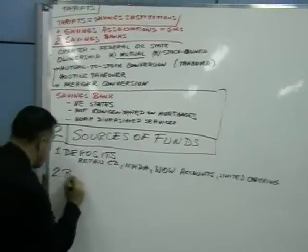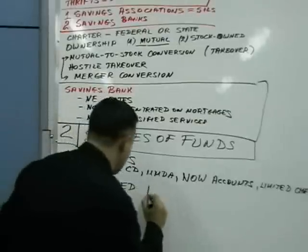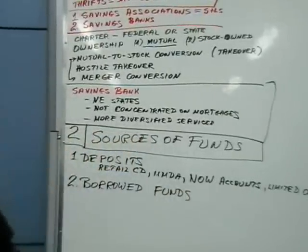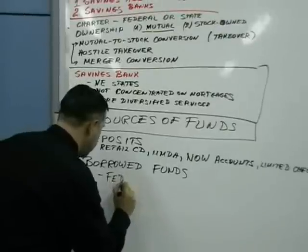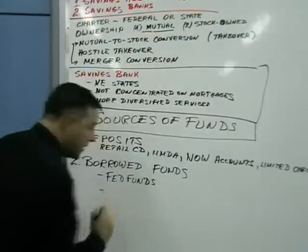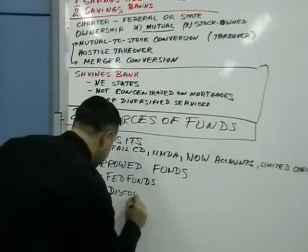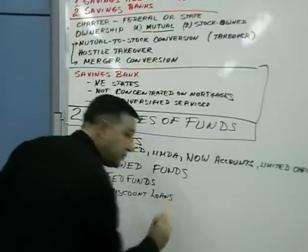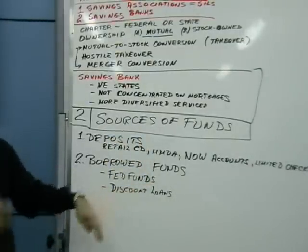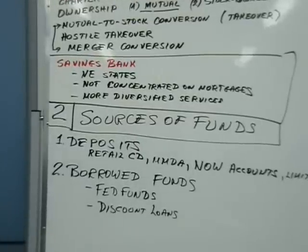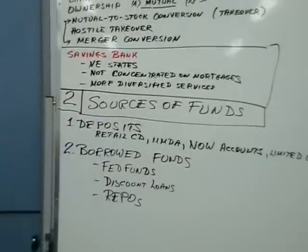The second source they use is of course borrowed funds. They borrow or lend — if they have surplus — to the Fed funds market. They also borrow from the Fed's discount window, which means discount loans, borrowing from the Fed. Most of these elements repeat themselves across institution types. The final way they typically finance themselves is through repos.